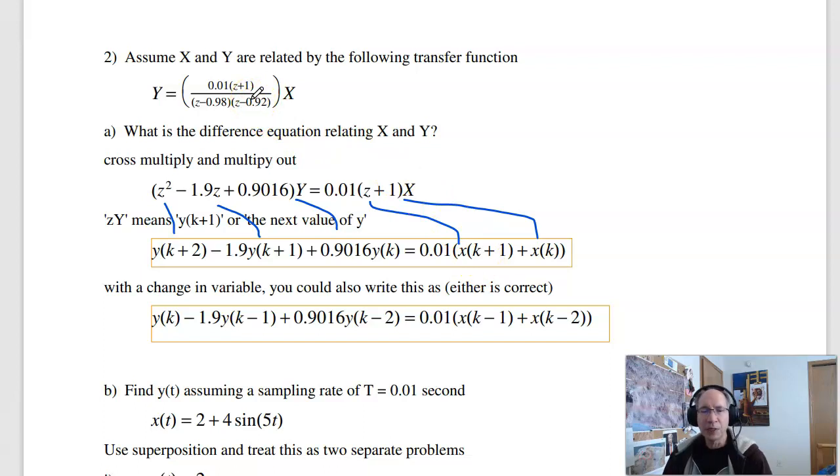So that's the difference equation corresponding to that transfer function. If you do a change in variable, I can shift all the k's by two. This is also valid. So either answer is correct.